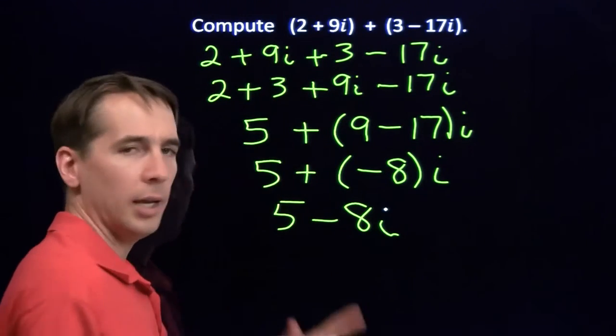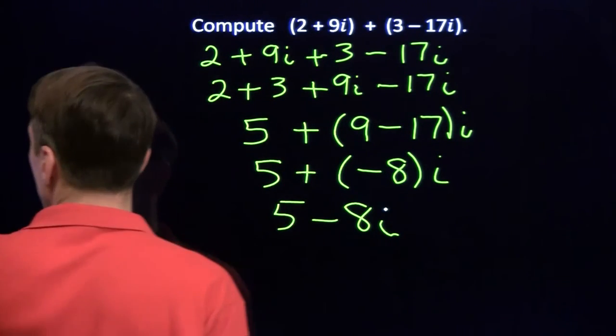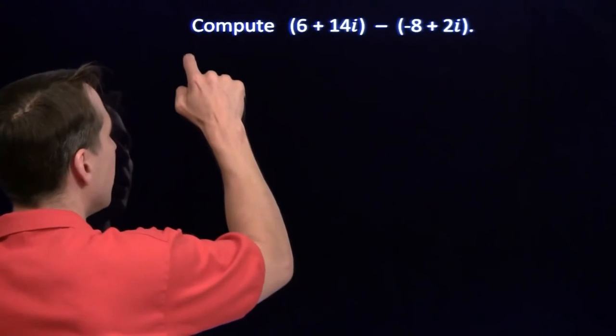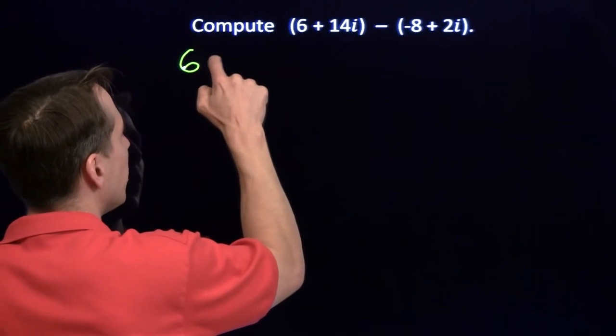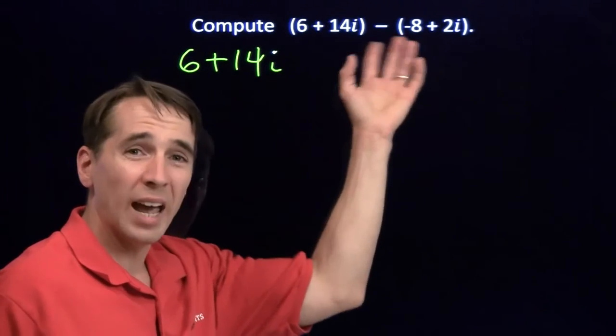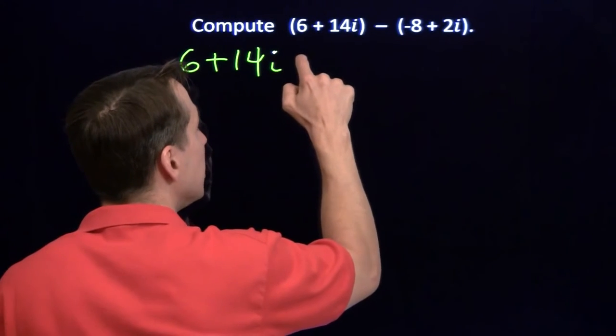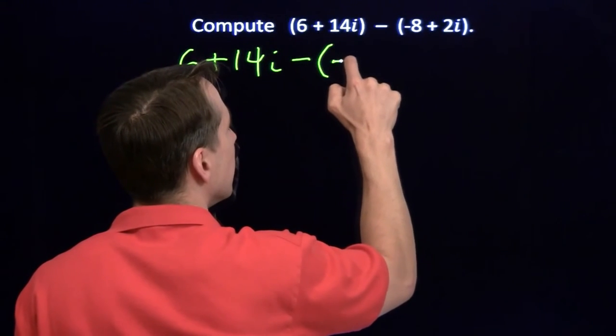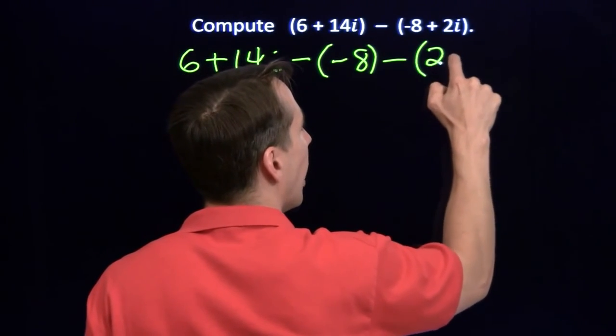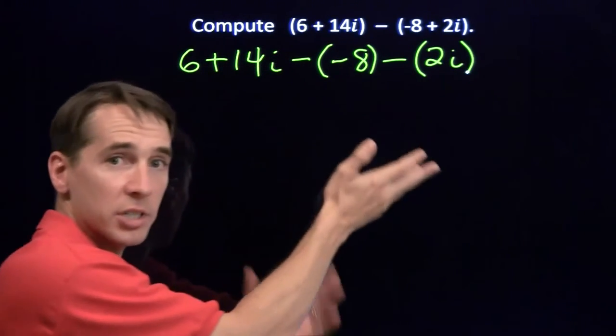So now that we can handle adding two complex numbers, let's take a look at subtracting one from another. Once again, we take away the parentheses as our first step. We get 6 plus 14i. Now, we have to be careful to distribute that negative. We're going to subtract the negative 8, and we're going to subtract the 2i. We have to be very careful with our signs.